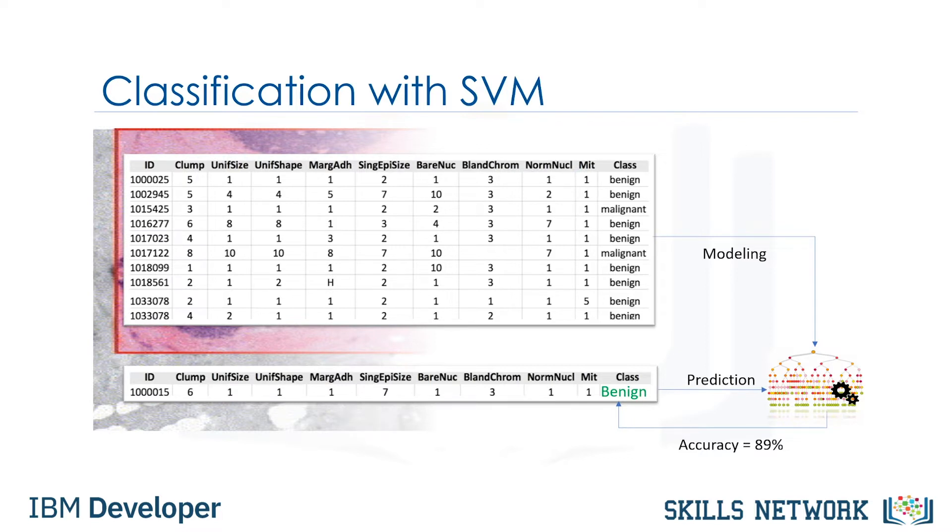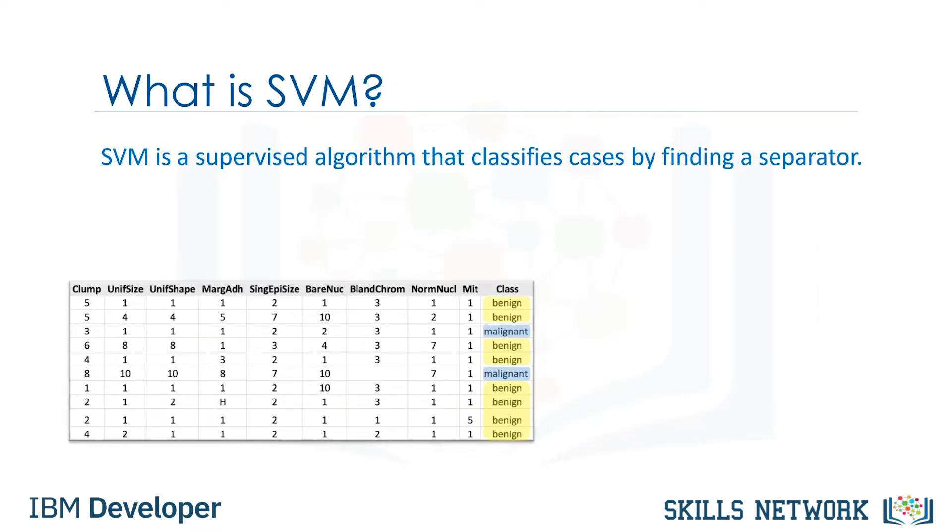Now, let me give you a formal definition of SVM. A Support Vector Machine is a supervised algorithm that can classify cases by finding a separator. SVM works by first mapping data to a high-dimensional feature space so that data points can be categorized, even when the data are not otherwise linearly separable. Then, a separator is estimated for the data. The data should be transformed in such a way that a separator could be drawn as a hyperplane.